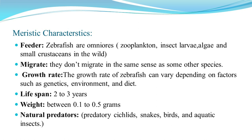Regarding meristic characteristics: zebrafish are omnivorous — they consume many plants and animals like zooplankton, insect larvae, algae, and small crustaceans. They don't show significant migration like other species, but migrate when food abundance changes. Growth rate varies according to factors like genetics, environment, and diet. Lifespan is 2–3 years; weight is between 0.1–0.5 grams. Natural predators include predatory snakes, birds, and aquatic insects.